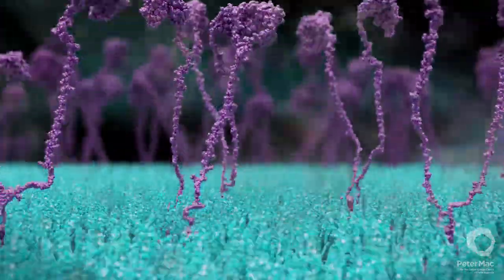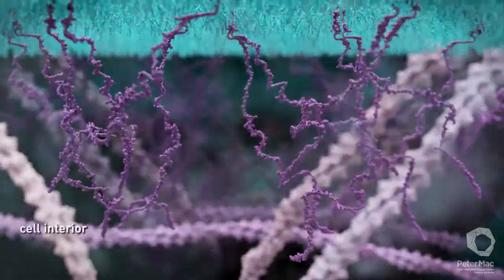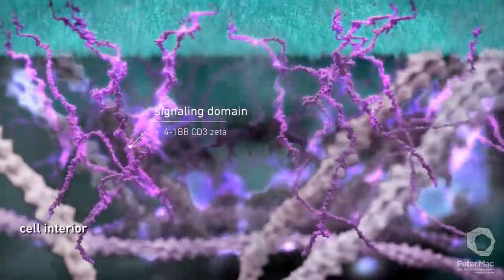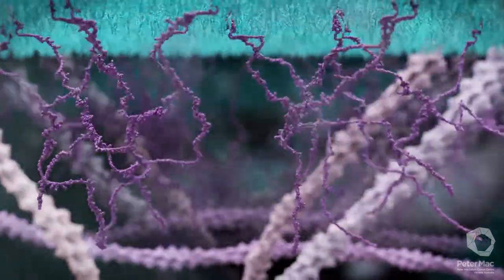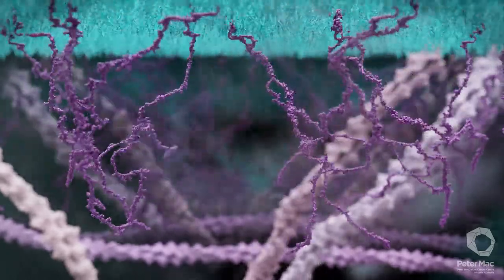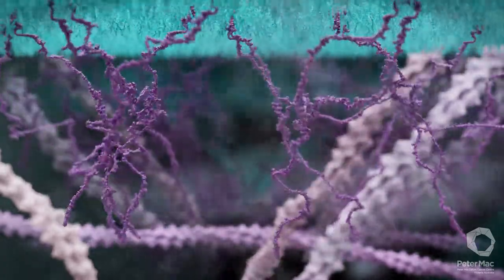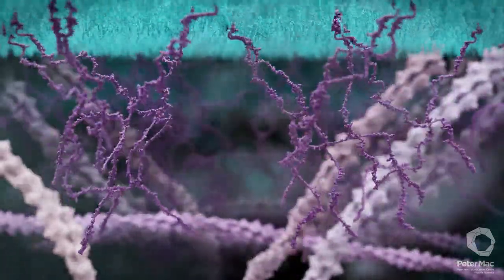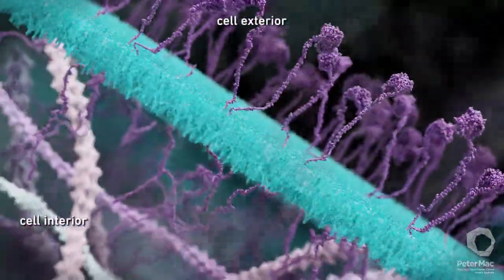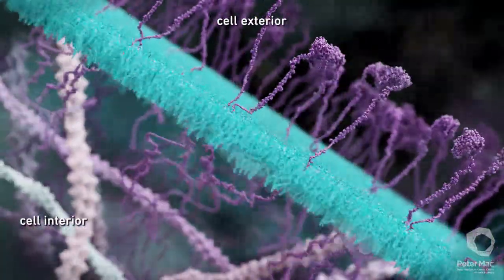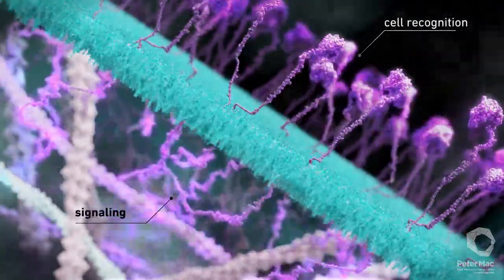We will now move below the cell surface. The signaling domain inside the cell is similar to that in the naturally occurring killer T cell receptor. Once the CAR T cell is bound, CAR signaling domains begin a chain of events which activates its killer function to destroy cancer cells. A CAR is therefore a modular combination of cell recognition components and signaling components all in one.